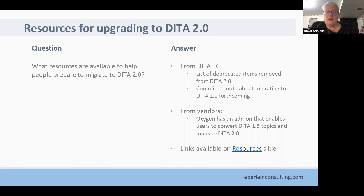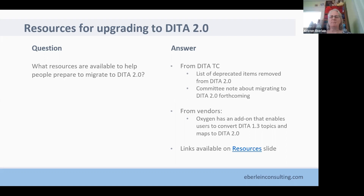We appreciate that Oxygen has already put in an add-on to help people do some conversions from DITA 1.3 to 2.0. They are working kind of side by side creating that add-on so you can preview what changes are going to happen and do some of those changes automatically with Oxygen. At the end of this presentation we have a full resources slide showing what's already available. There may well be other work that vendors have done that I'm not aware of, so if there is other work in the works, let us know so we can track that.